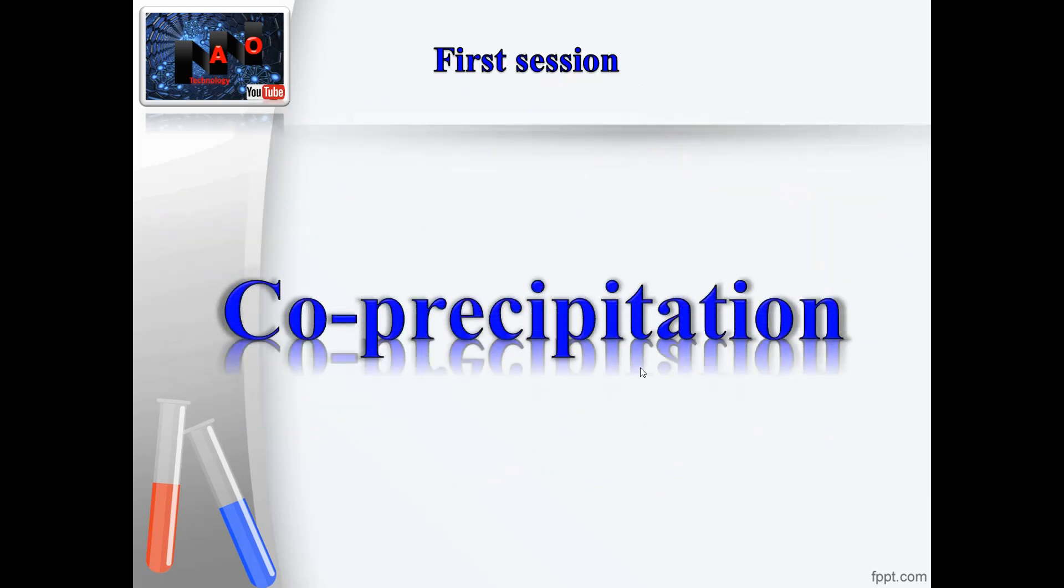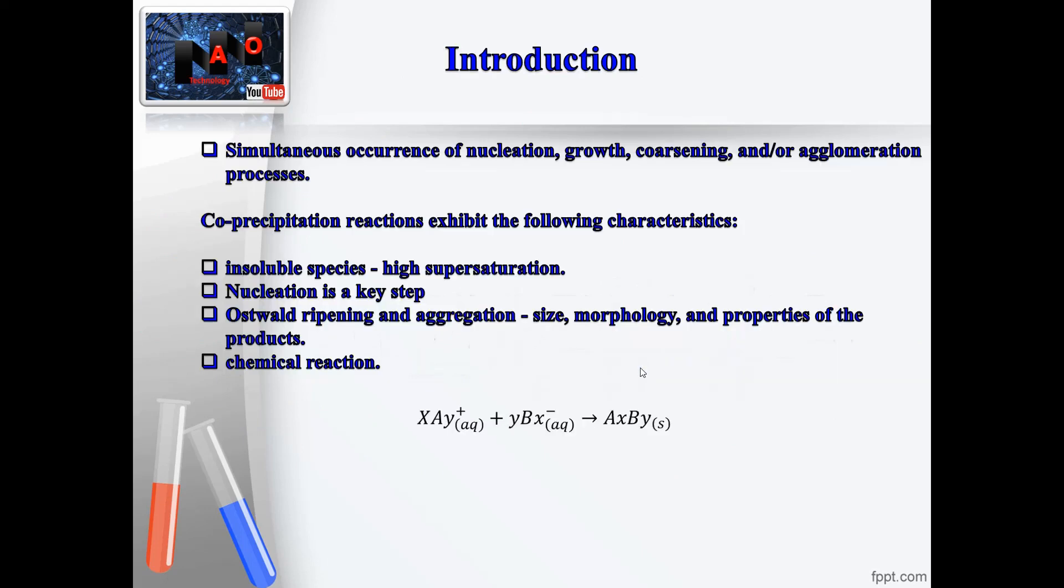I'm going to talk about co-precipitation method. Co-precipitation reactions involve the simultaneous occurrence of nucleation, growth, coarsening, and/or agglomeration processes.